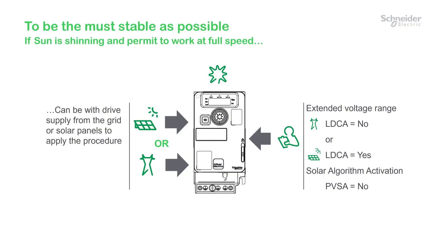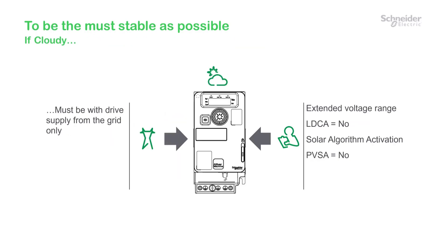In sunny conditions, to ensure maximum stability and work at full speed, set Low Voltage Assign to No when connected to the network and to Yes when using solar panels. In cloudy conditions, keep Low Voltage Assign set to No.